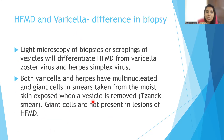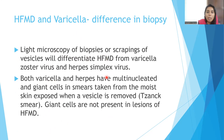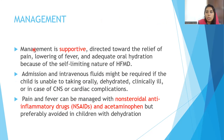A theoretical question: how can we differentiate HFMD and varicella on biopsy? In light microscopy of biopsies or scrapings of vesicles — the Tzanck smear — both varicella and herpes will show multinucleated giant cells in smears taken from moist skin areas when the vesicle roof is removed. However, in HFMD, giant cells will not be seen. So varicella or herpes will have giant cells; HFMD will not.